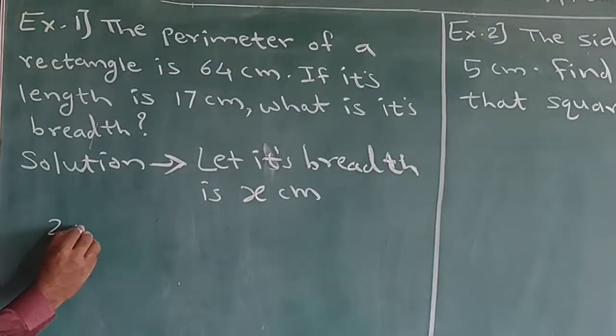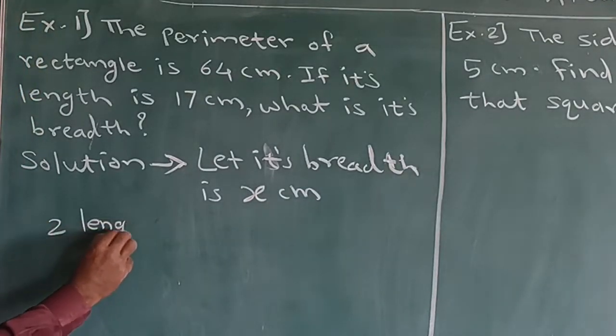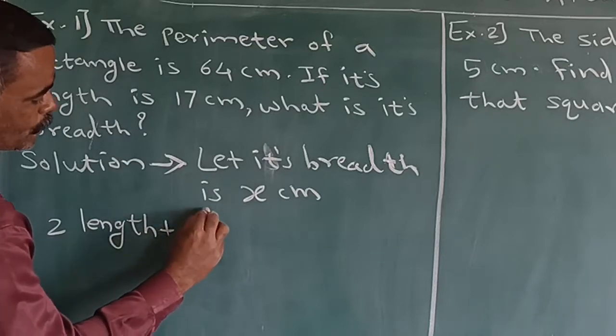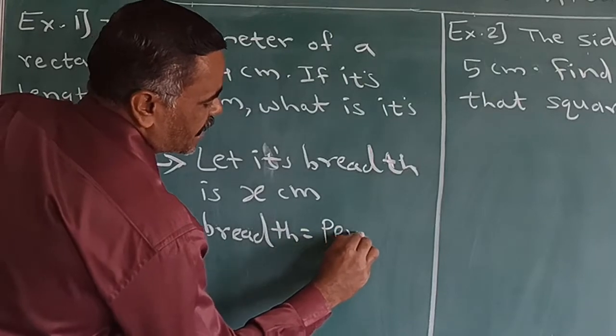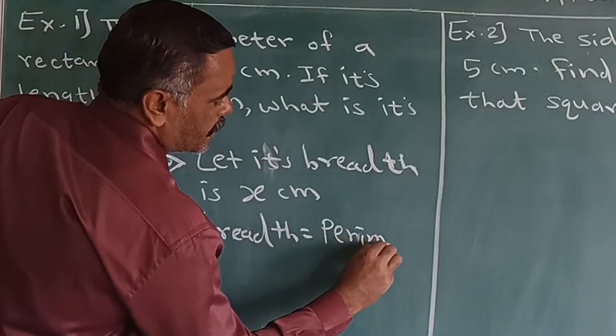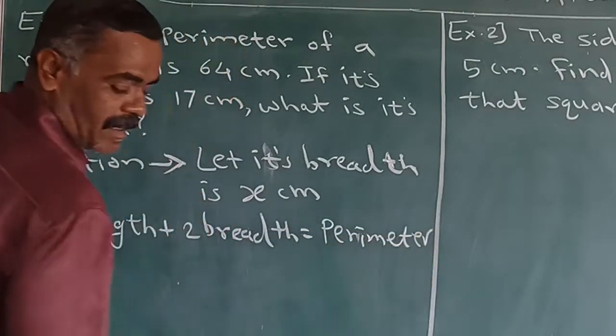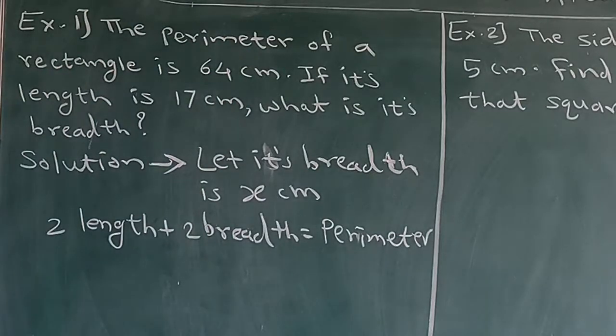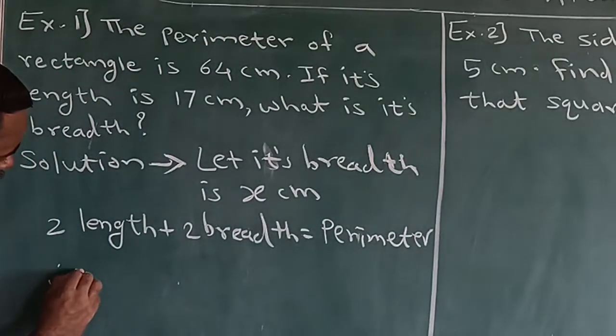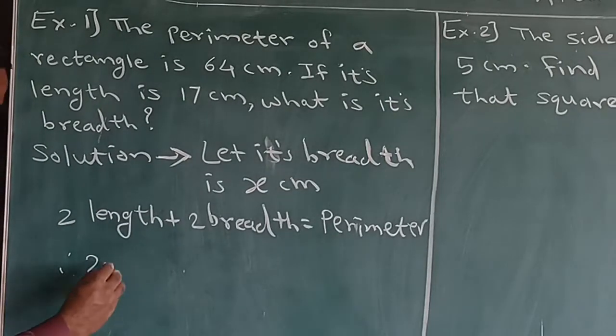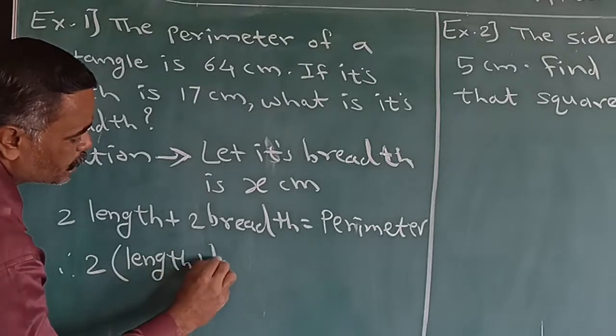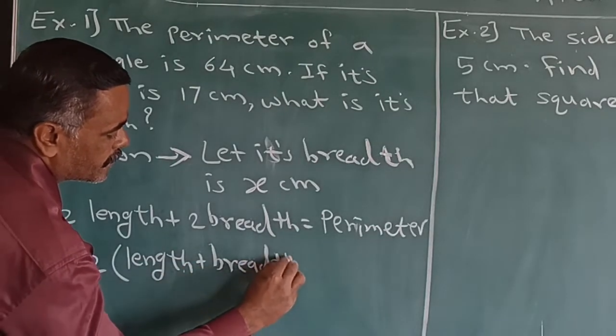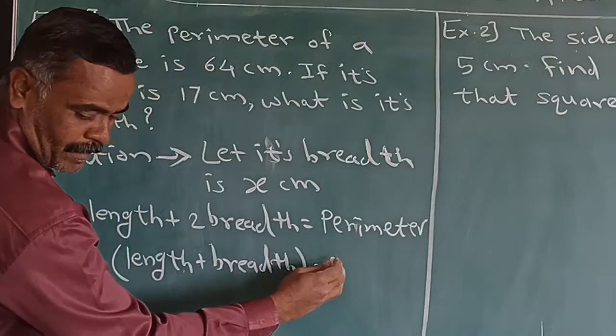2 into length plus 2 into breadth is equal to perimeter. Here, this is our formula. And therefore, 2 into length plus breadth is equal to 64.